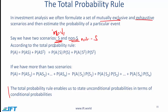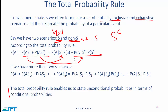According to the total probability rule, the probability of event A — let's say that is the probability of the stock price going up — is equal to the probability of A and S (the joint probability of the stock price going up and interest rates going down), plus the probability of the stock price going up and interest rates not going down. Sometimes we express not-S as S-complement. This can be written using the multiplication rule as: probability of A given S times probability of S, plus probability of A given S-complement times probability of S-complement.